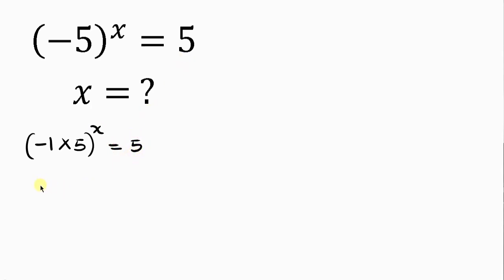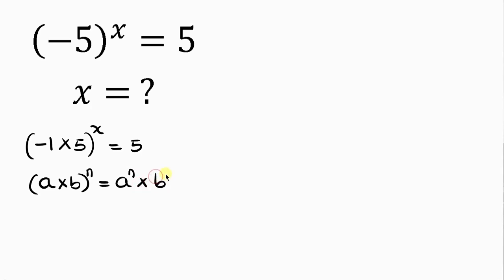Our next step is to apply the law of indices to this expression. The law of indices says that when we have, for example, a times b raised to the n, this power n affects both a and b because of the multiplication. So this can be written as a to the n times b to the n. Applying this, our expression becomes negative 1 to the x times 5 to the x.